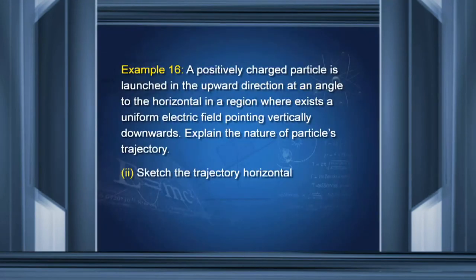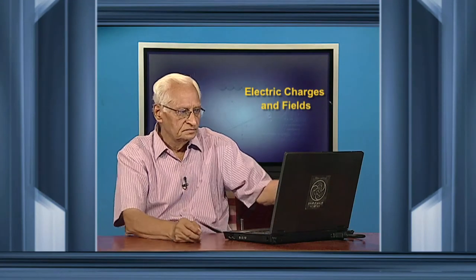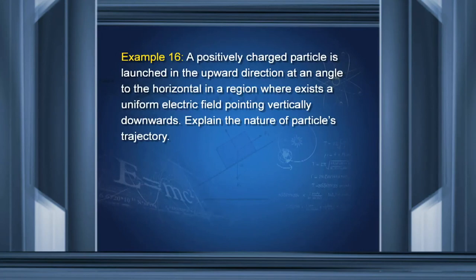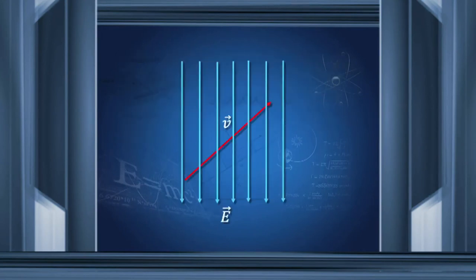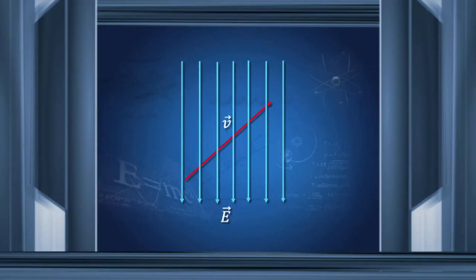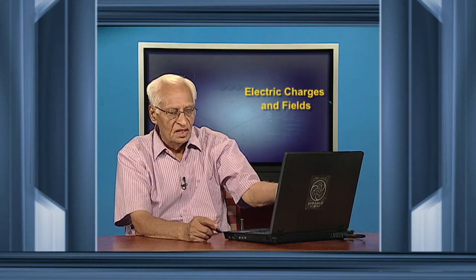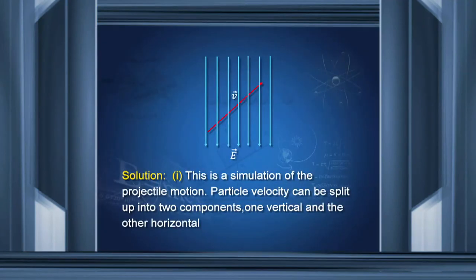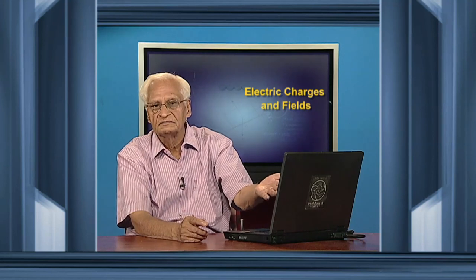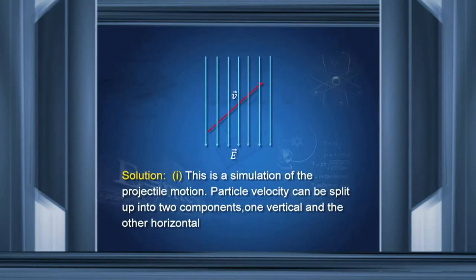A positively charged particle is launched upward at an angle to the horizontal in a uniform electric field. Resolving the initial velocity into components along the field and perpendicular to it: perpendicular to the field there is no force, while along the field there is a force decelerating the particle. This is exactly analogous to projectile motion under gravity, so the path taken is that of a projectile.